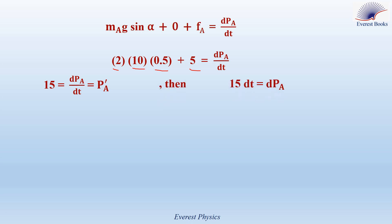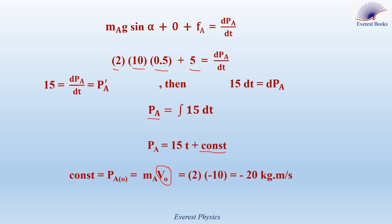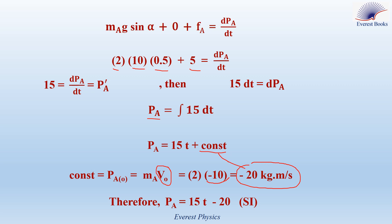Rearranging: 15 dt equals dPa. Taking the antiderivative of both sides gives Pa equals 15t plus a constant. The constant equals Pa at t equals 0, which equals MA times V₀. Since A is launched from the bottom towards the top, V₀ is opposite to the x-axis, so its algebraic value is minus 10 m/s. Therefore Pa at t equals 0 is minus 20 kg·m/s. Substituting, Pa equals 15t minus 20 SI units.